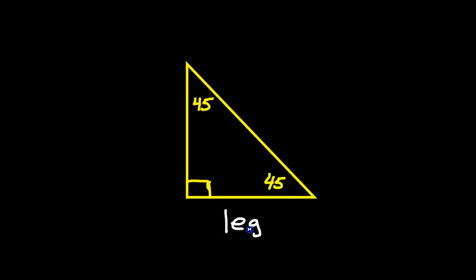The pattern for a 45-45-90 triangle is that it's isosceles. These two sides are the same, and they're called legs. And then, of course, we have the hypotenuse is over here. But I'm not going to call it the hypotenuse because the relationship is that the hypotenuse is equal to the legs times radical two. So it goes leg, leg, leg radical two.